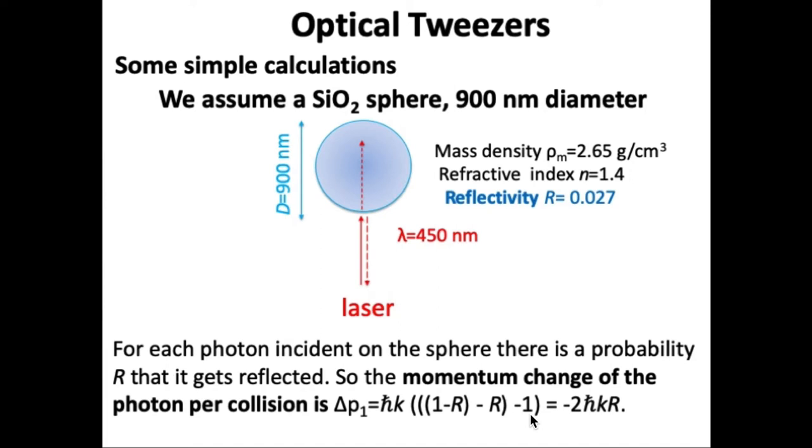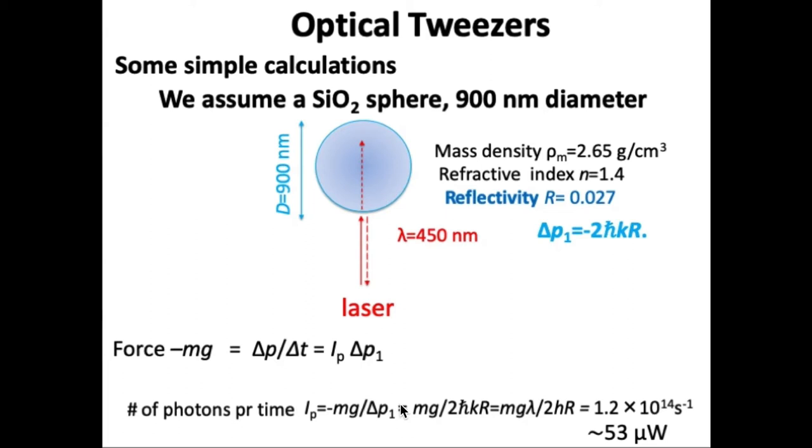The momentum after hitting the sphere is the superposition of the photon being reflected. Its probable momentum is minus R times h-bar k, because it is in the negative direction. And the superposition of the photon not being reflected, which is 1 minus R times h-bar k. We write down the results for delta P1 here. Thus, the gravitational force minus mg equals the change of momentum of the photons per time unit, delta P over delta T, which is the number of photons per time, I sub p, multiplied by the momentum change of one photon with the sphere, which was delta P1. Then the number of photons per time unit is minus mg divided by delta P1.